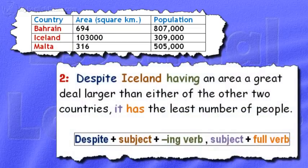Model 2. Despite Iceland having an area a great deal larger than either of the other two countries, it has the least number of people.